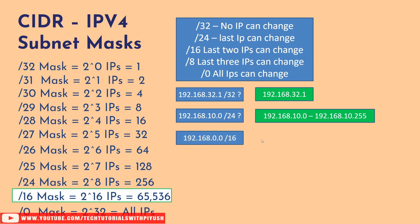Another example: 192.168.0.0/16 should have 65,536 IPs. In a /16 mask, the last two octets can change, starting from 192.168.0.0 and going up to 192.168.255.255. Calculating the number of IPs in that range gives 65,536. Hopefully seeing this visually helps you understand how to calculate the number of IPs in any subnet mask or subnet range.